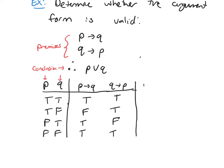And then we're going to make the column for P or Q. So true, true, true, false.